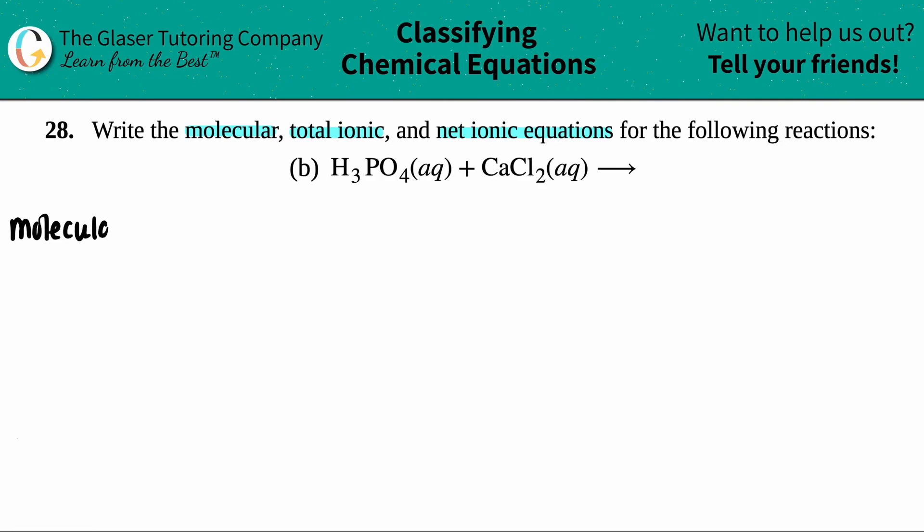I'm just going to put molecular over here, and let's start off with what they gave us. We need to react phosphoric acid, which is H₃PO₄, and they tell us that's aqueous. And that's reacting with calcium chloride, CaCl₂, and that's also aqueous. We have to find the products.